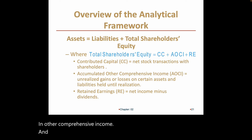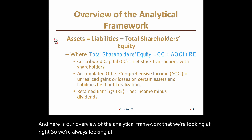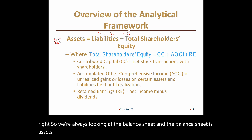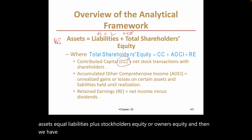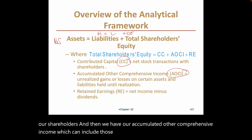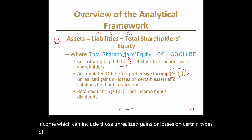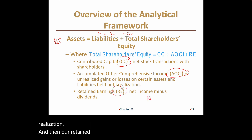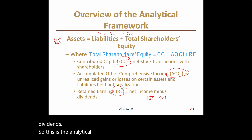Here is our overview of the analytical framework. The balance sheet is always: assets equal liabilities plus stockholders' equity. Within equity, we have contributed capital — net stock transactions with shareholders — accumulated other comprehensive income, which includes unrealized gains or losses on certain assets and liabilities held until realization, and retained earnings, which is essentially net income less dividends.